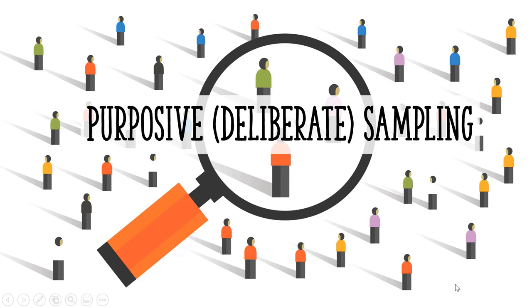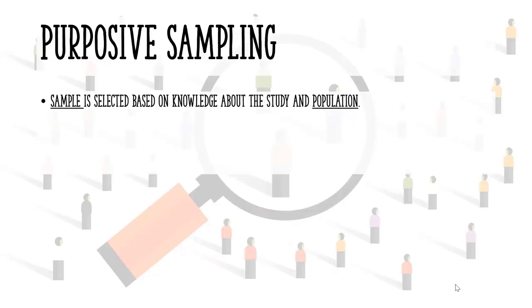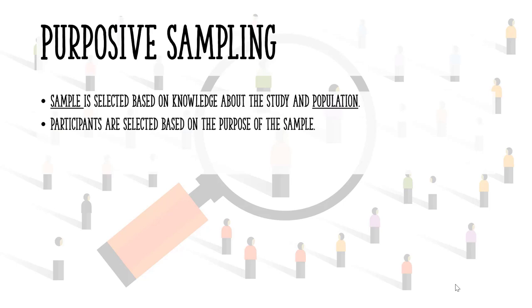In this video, I'll show you what purposive sampling is. I'll go over the different types and some of the advantages and disadvantages. A purposive sample is based on your knowledge about the study and population. Participants are chosen based on the purpose of the sample. The alternate name is deliberate sampling, which indicates you're choosing according to the needs of your study.